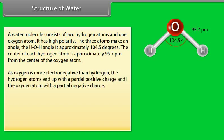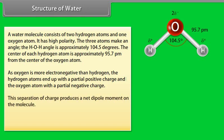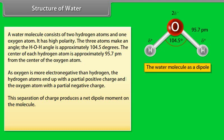As oxygen is more electronegative than hydrogen, the hydrogen atoms end up with a partial positive charge and the oxygen atom with a partial negative charge. This separation of charge produces a net dipole moment on the molecule.